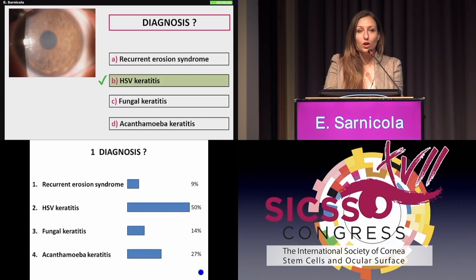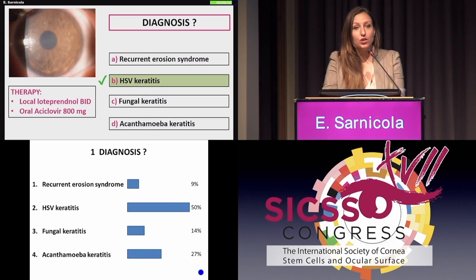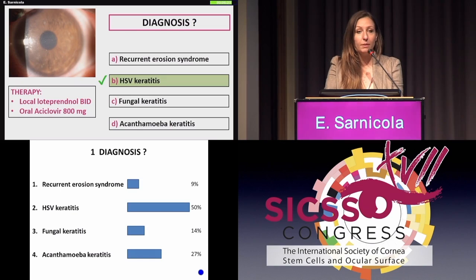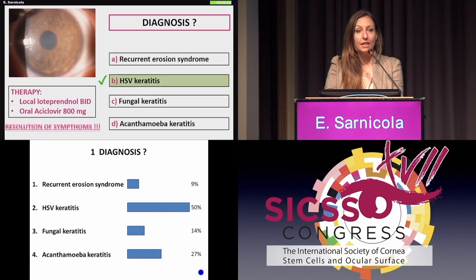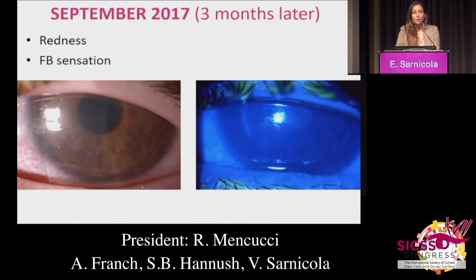Acanthamoeba keratitis. So it isn't a typical picture, but this is what we opted for as well. We initiated local treatment with PHMB, twice a day, a cycle of 800 milligrams at the beginning tapering down to one tablet a day, and in a few days the patient showed clear improvement of symptoms.